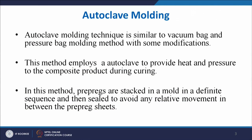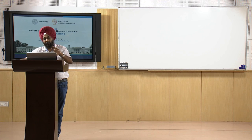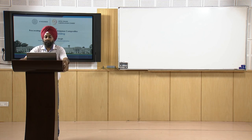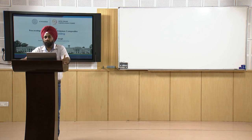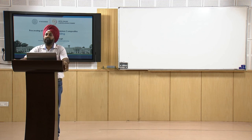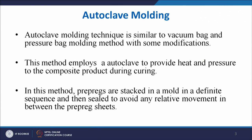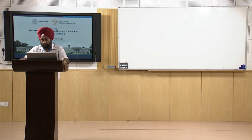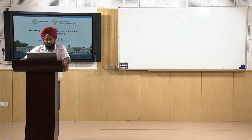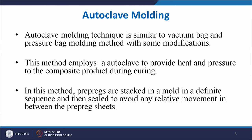The autoclave molding technique is similar to vacuum bag and pressure bag molding methods with some modifications. The basic principle remains the same across autoclaving, vacuum bag molding, and pressure bag molding. This method employs an autoclave to provide heat and pressure to the composite product during curing — the two major operating variables are heat and pressure.